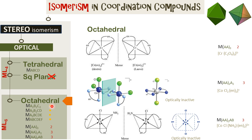Octahedral structures of various types like M(A)(C)(D)(E)(F) should theoretically show optical isomerism, but these have not been experimentally resolved so far and are therefore not studied. I hope you found this useful. Thanks for watching.